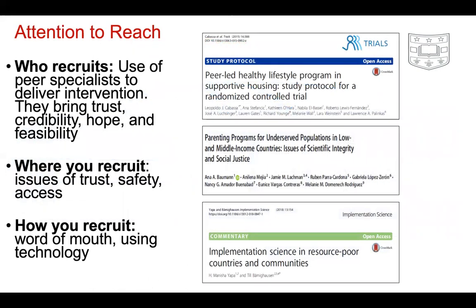Attention to reach is not a new thing. We have articles thinking about who is recruiting participants, where you recruit them — because there are issues of safety and access — and how you recruit them, using word of mouth or technology. You might have the same intervention, but depending on the context, you might have different reach and different access. We implementation scientists know context matters, and now we want to encourage thinking about context in the sense of reaching those who actually need to be in our interventions.